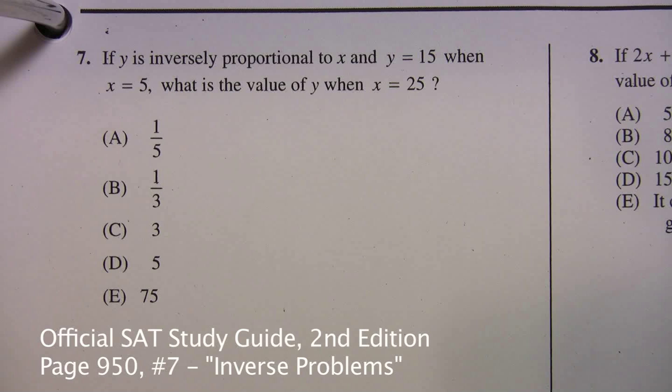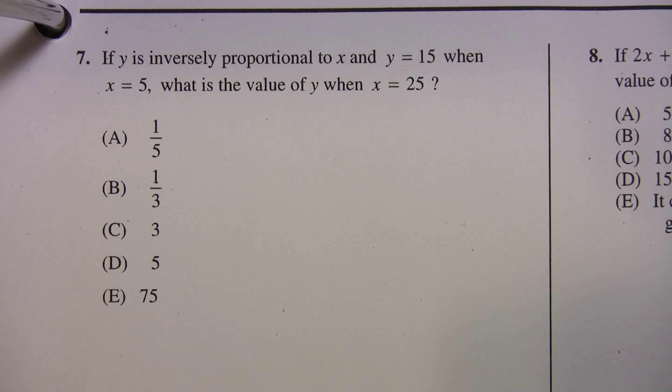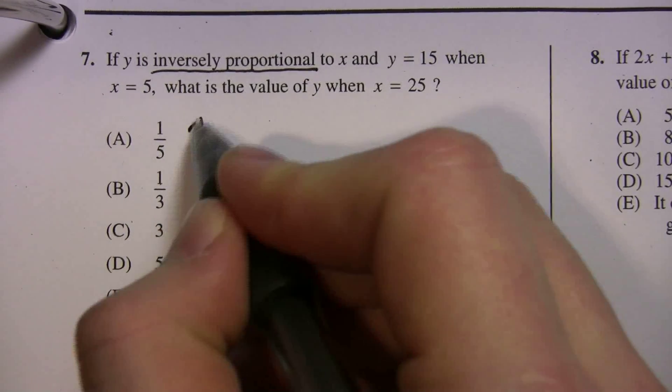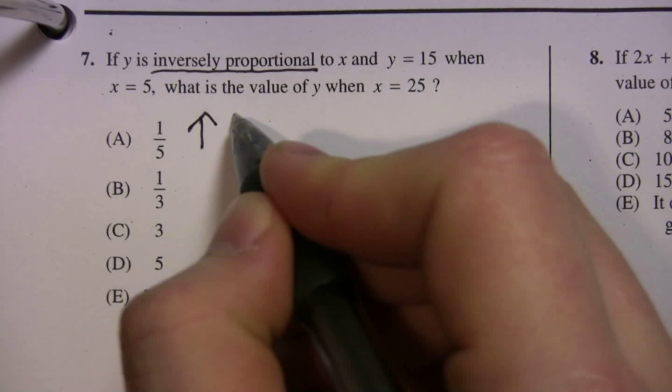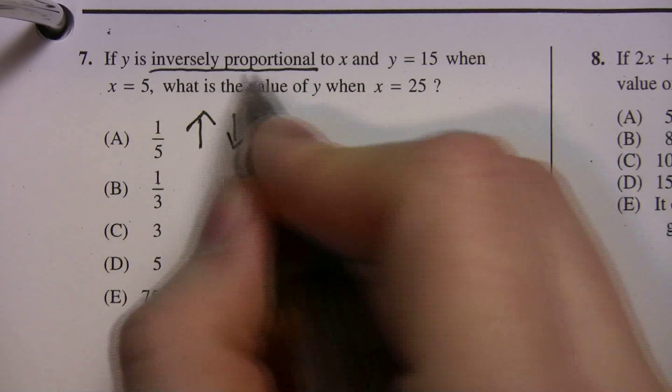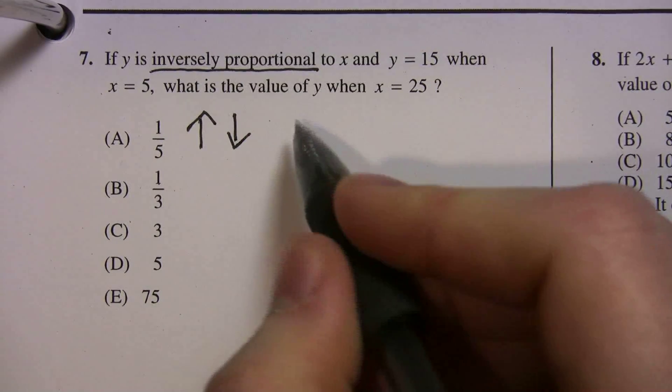We're on page 950, this is number 7, and it's an inverse problem. If y is inversely proportional to x, and y equals 15 when x equals 5, what is the value of y when x equals 25? So I can show you a formula how to do this. Before I do that, you should understand what inversely proportional means. So what that means is that one variable goes up, the other variable has to come down. So when you get that catchphrase, inversely proportional, you can use this formula.